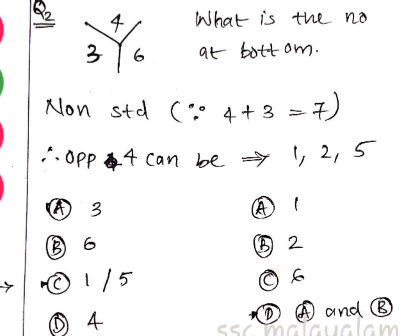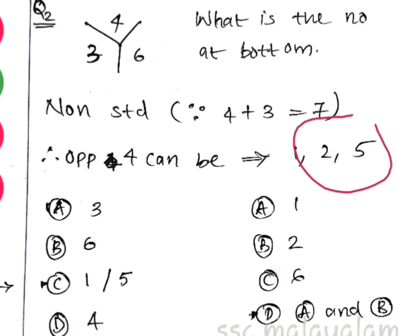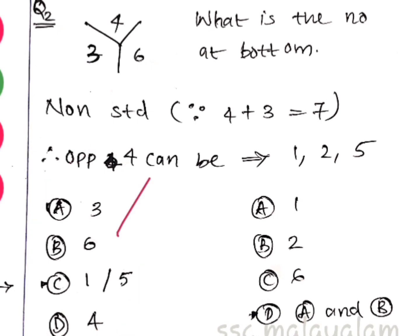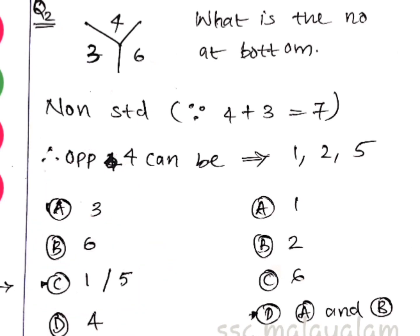Now we have 4, 3, and 6 visible. The numbers on the other faces are 1, 2, and 5. If we have 4 and need the opposite side, we find the answer from the available options. The answer options are A, B, C, and D — select the correct one.